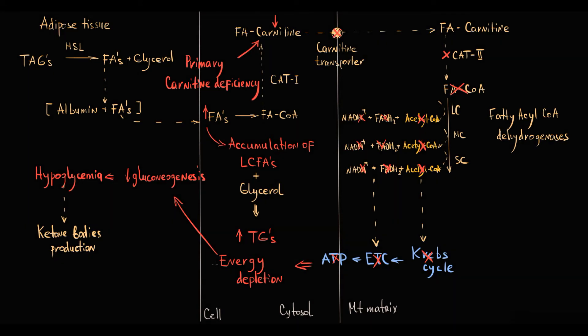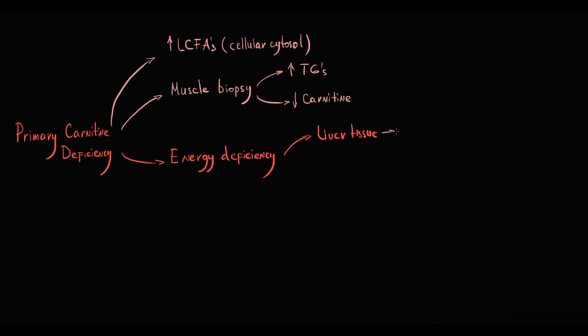But without acetyl-CoA, liver tissue cannot produce ketone bodies, so this results in low ketone bodies level in the blood. So mitochondria cannot compensate low blood glucose level by production of ketone bodies, and this results in hypoketotic hypoglycemia, which is the signature feature of all beta-oxidation defects.